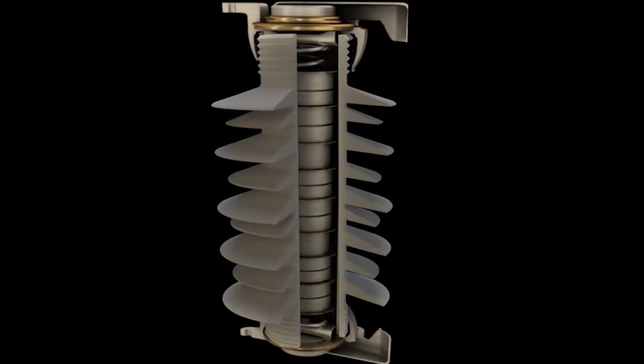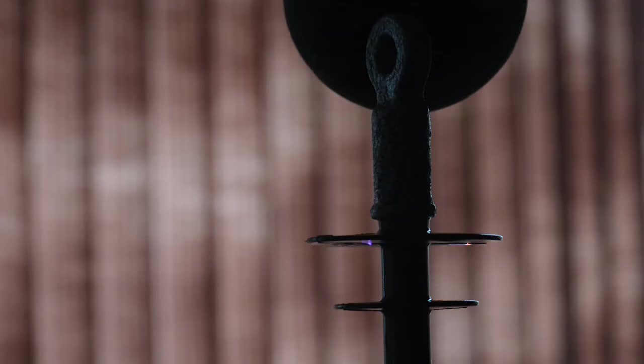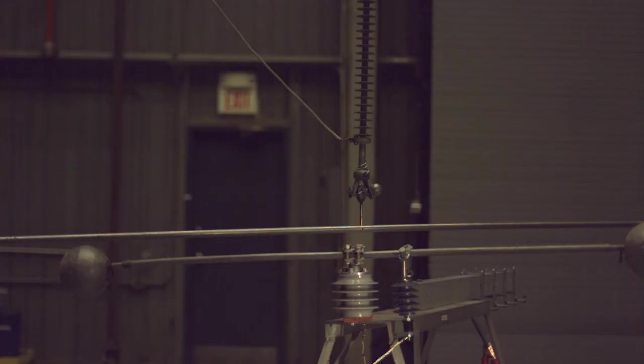The component critical for the arrestor to work is the MOV, the heart of the surge arrestor. The MOV or metal oxide varistor is a disk or block of crystalline semiconductor material made from zinc oxide. A varistor can instantly change its resistance to voltage from high resistance during everyday operation to low resistance if a lightning strike threatens nearby.